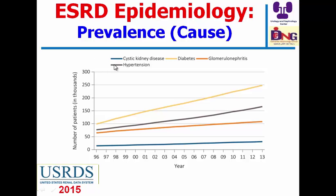According to the USRDS, the most common cause of end-stage renal disease through the years is diabetes, which is increasing as a cause, followed by hypertension, glomerulonephritis, and cystic kidney disease.